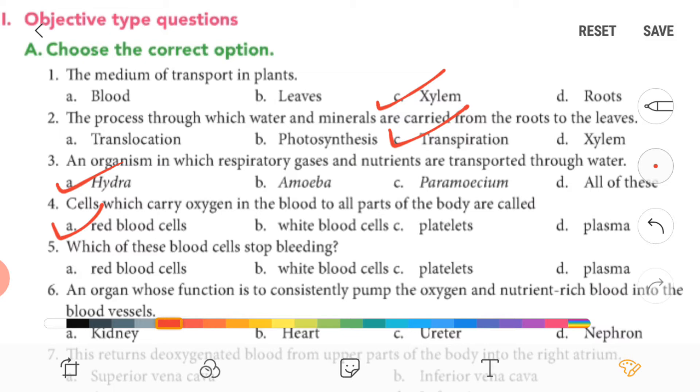Now fifth one, which of these blood cells stop bleeding—it is platelets.